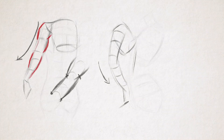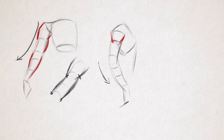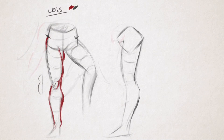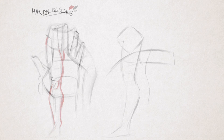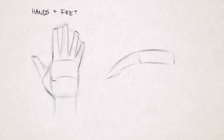We're going to finally start looking at the individual areas of the body. We're going to go from the head to the feet, break each area down, and see the ways that we can go about constructing each part. So, let's get started.